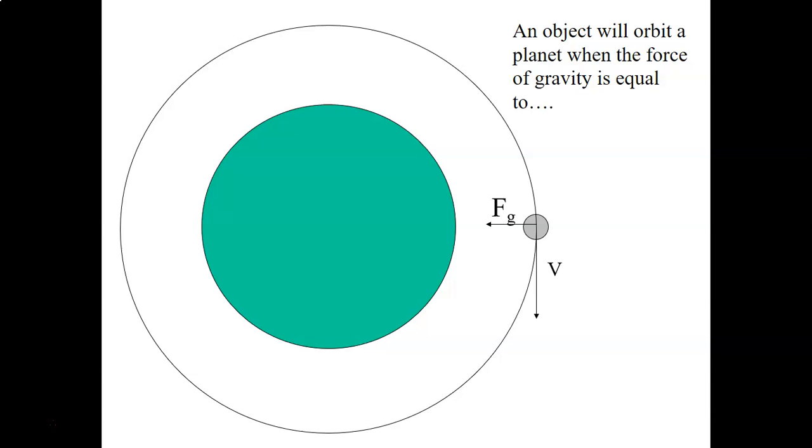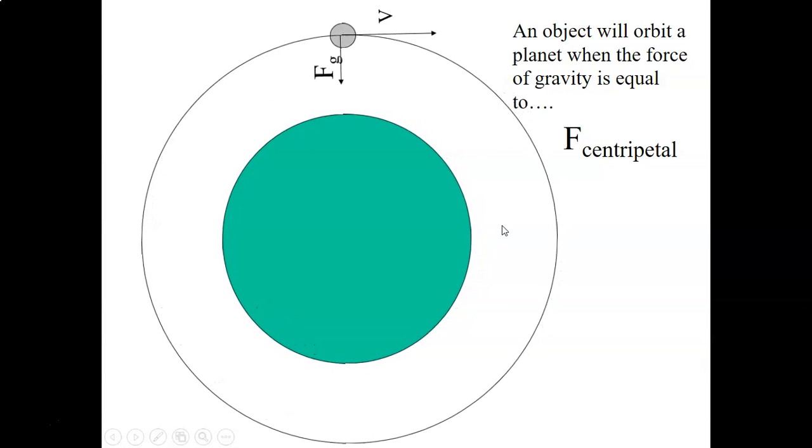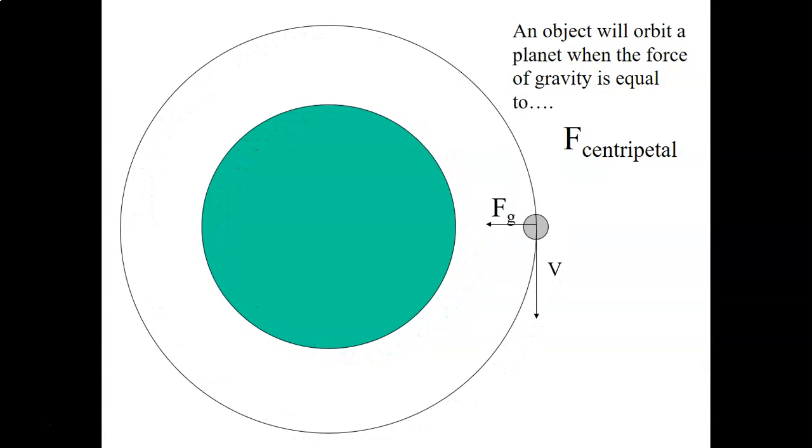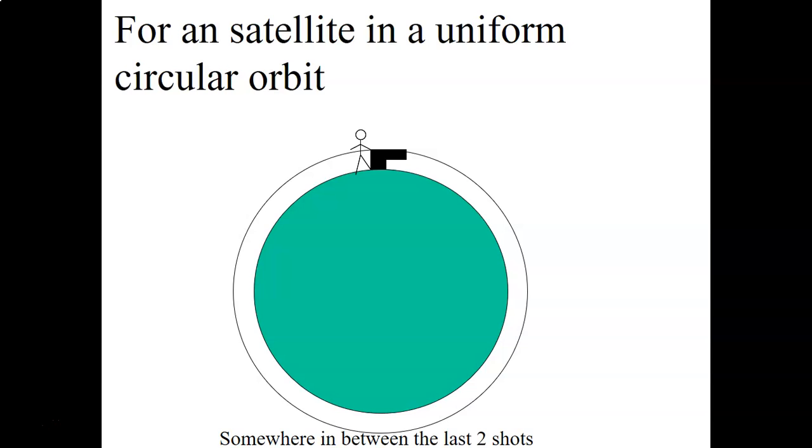So let's say we've got a satellite, we've got an object in orbit, a satellite, and it's traveling around some planet. If the force of gravity is equal to the centripetal force, it's going to travel in uniform circular motion, meaning it's going to be traveling around in a circle at a constant speed.